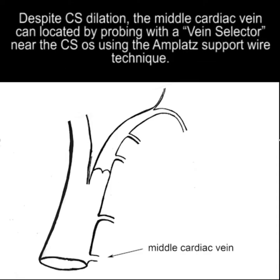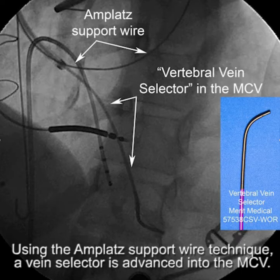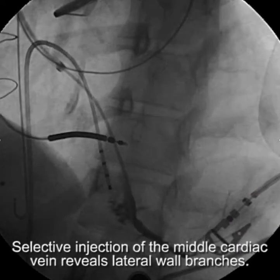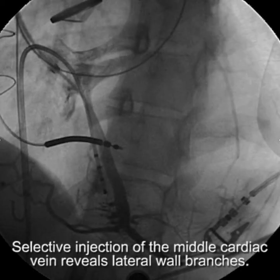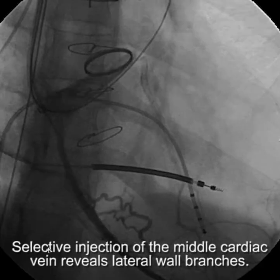Despite CS dilatation, the middle cardiac vein can be located by probing with the vein selector near the OS using the AMPLAT support wire technique. Here we have the AMPLAT support wire, the sheath pulled back out of the CS, and the vertebral vein selector locating the middle cardiac vein by probing just at the OS of the CS. Selective injection of the middle cardiac vein reveals lateral wall branches, as illustrated here.